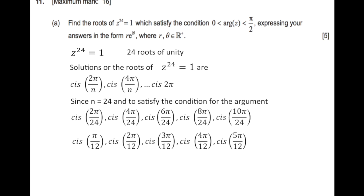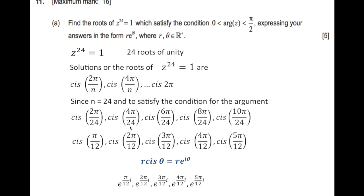We simplify so the denominator equals 12: 2π/24 = π/12, 4π/24 = 2π/12 = π/6, 6π/24 = 3π/12 = π/4, 8π/24 = 4π/12 = π/3, and 10π/24 = 5π/12. Since the modulus r = 1, cis(θ) = e^(iθ). So the five answers are: e^(iπ/12), e^(i2π/12), e^(i3π/12), e^(i4π/12), and e^(i5π/12).